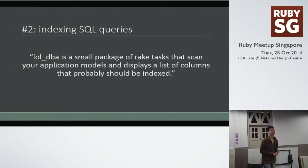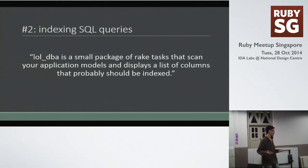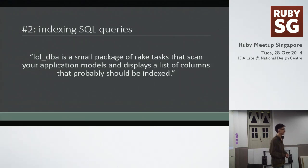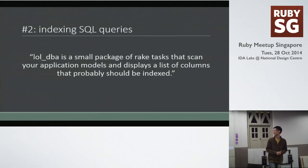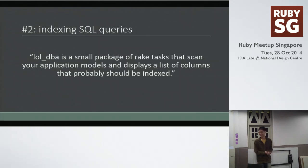You can also use Nitrous. The next one: given a database and a schema, how do you know what you want to index? You can use this gem called lol_dba. It's supposed to basically run through all your models and generate a list of indices which should be in your schema. Could be useful — I told myself I should try it out, but I actually haven't yet.